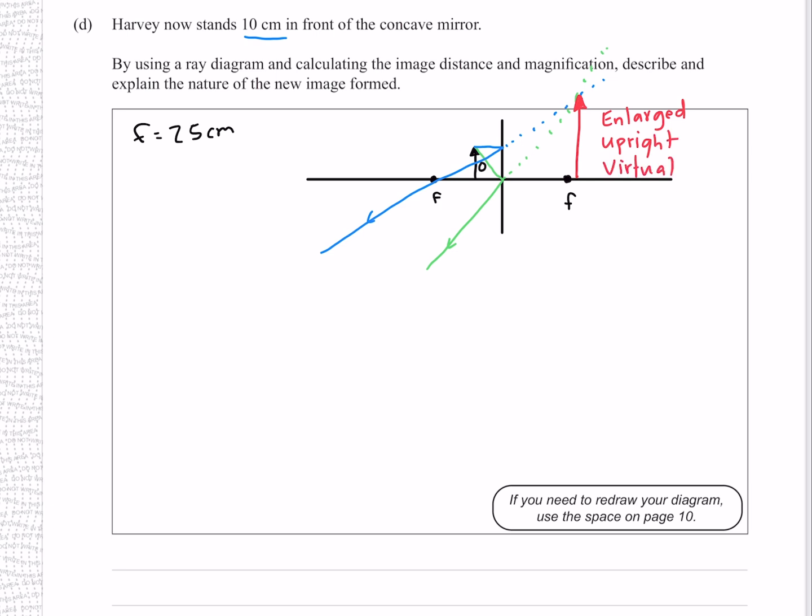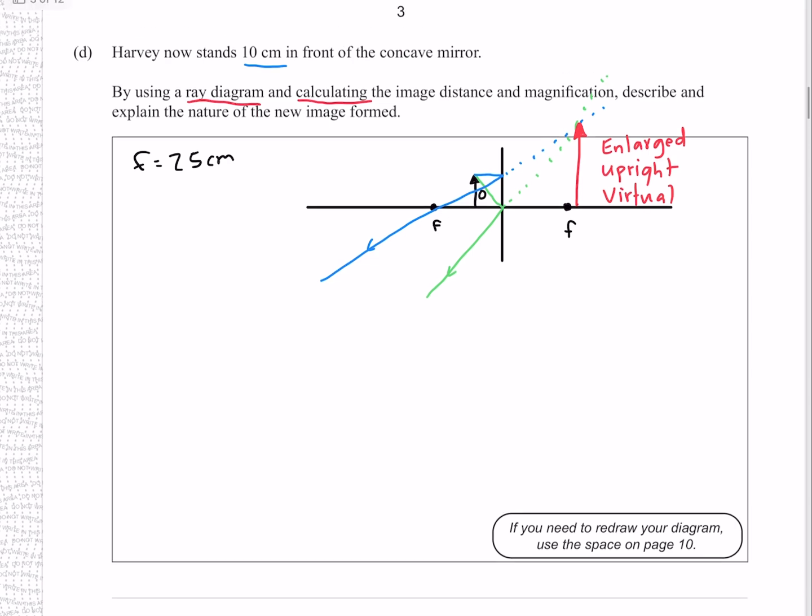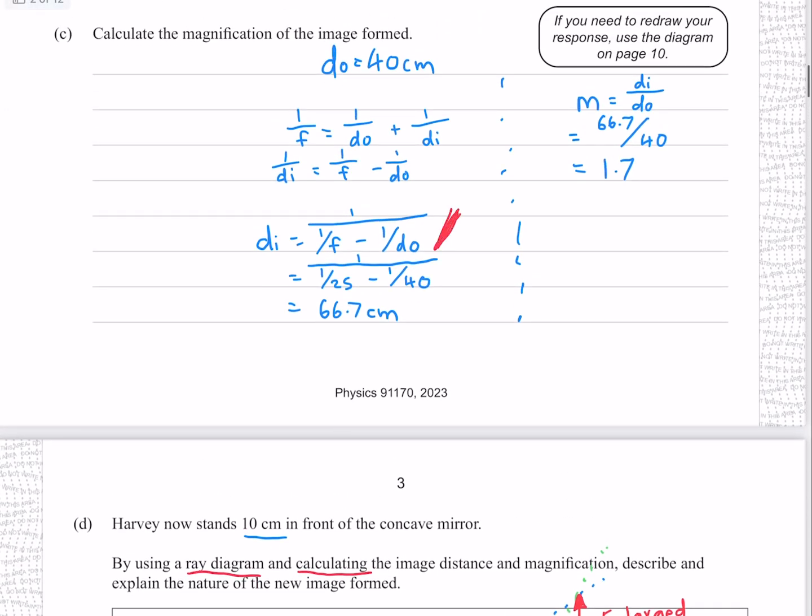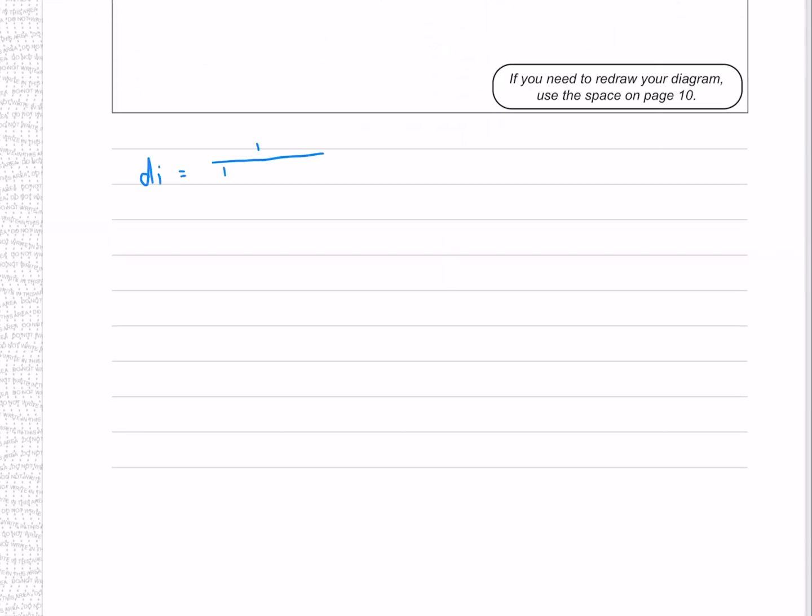And now not only has it asked us to do the ray diagram, it also wants us to do the calculations. To find the image distance we can once again use Descartes law, but to save a bit of time we can use our pre-solved version from here, where our new distance of the object was 10cm. Which gives me negative 17cm to 2 significant figures. Now we can find the magnification using the same equation that we used last question, which gives me negative 1.7 to 2 significant figures.